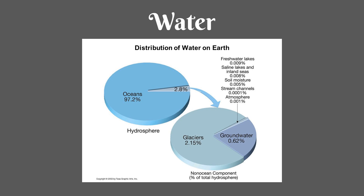One abiotic factor is water. 71% of the Earth is covered with water. Most of Earth's water is found in the oceans. The rest is freshwater, and can be found in rivers, lakes, groundwater, glaciers, and water vapor.